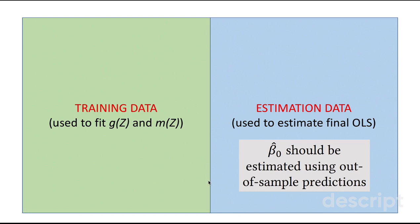It means that we need to split our data into two halves. On the first half, we train g and m, the two machine learners, and on the second part, we estimate the final OLS. In other words, the estimate for beta should be estimated using out-of-sample predictions.